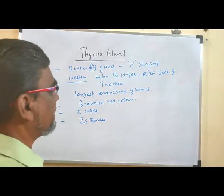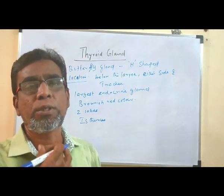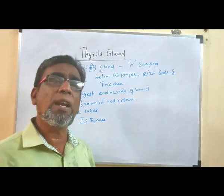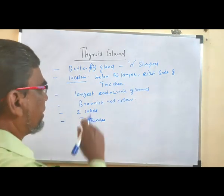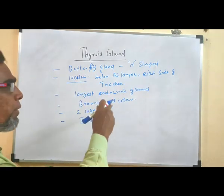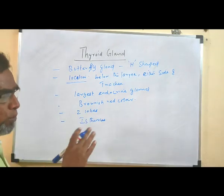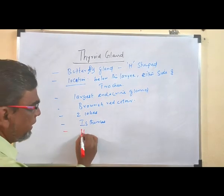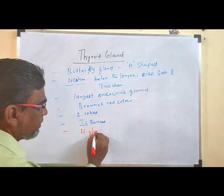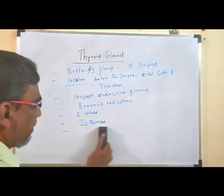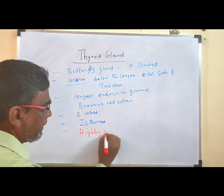So let us understand: here the trachea is present, and on two sides it looks like a butterfly shape — so it is called the butterfly gland. It is located below the larynx and either side of the trachea. It is the largest endocrine gland, brownish-reddish in color, with two lobes connected by the isthmus. It is also highly vascular.